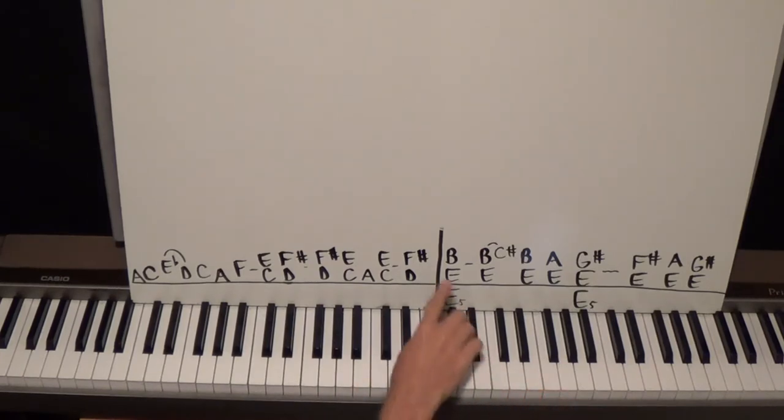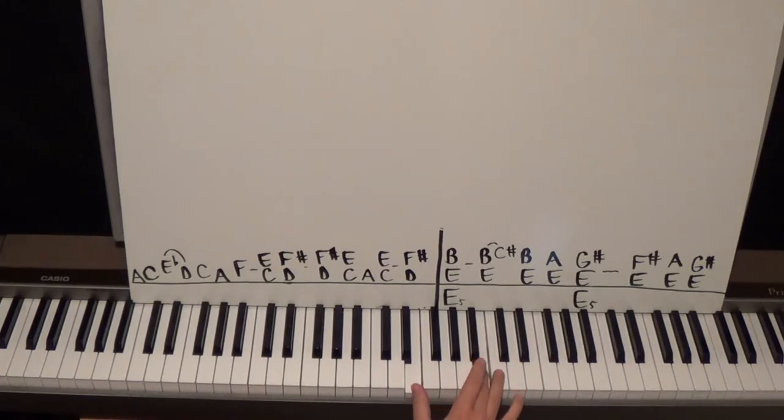But let's look: E and B in the right hand, and then E, B, and we flip it to C sharp, and then B, A, G sharp. Notice the E's are on the bottom.